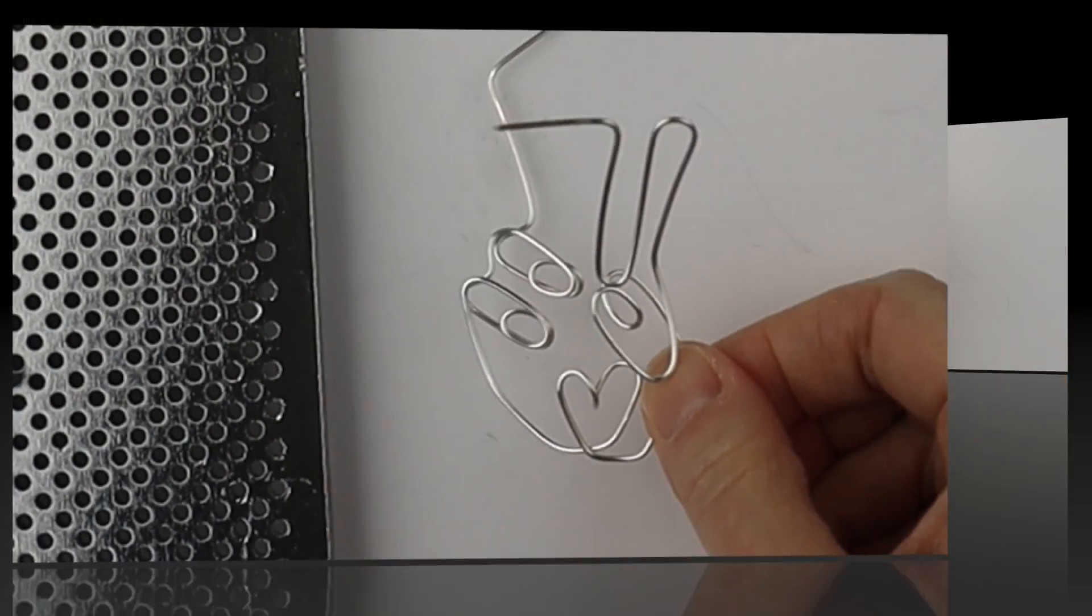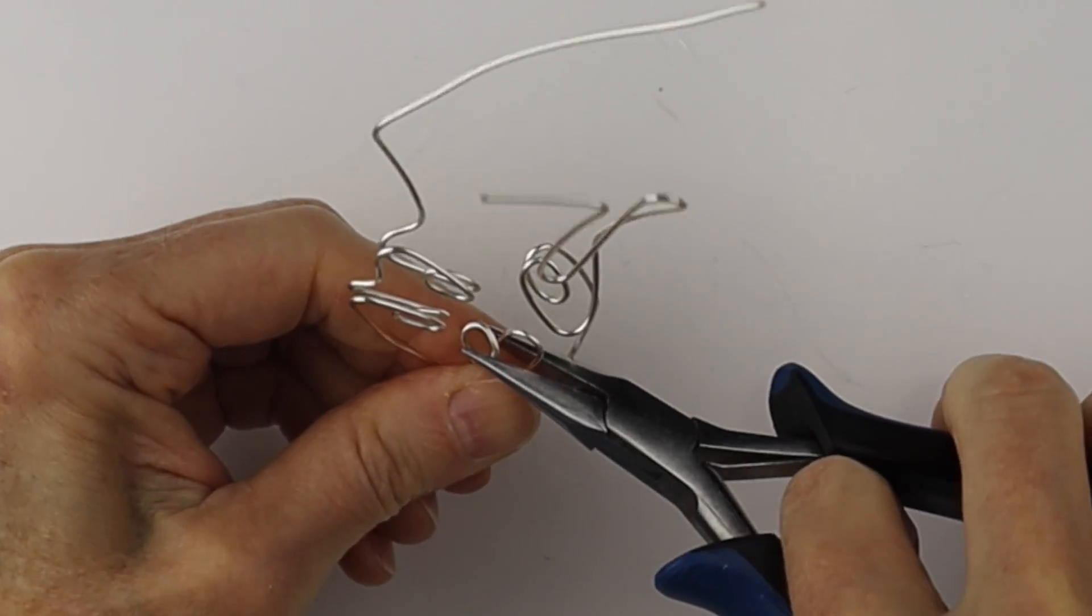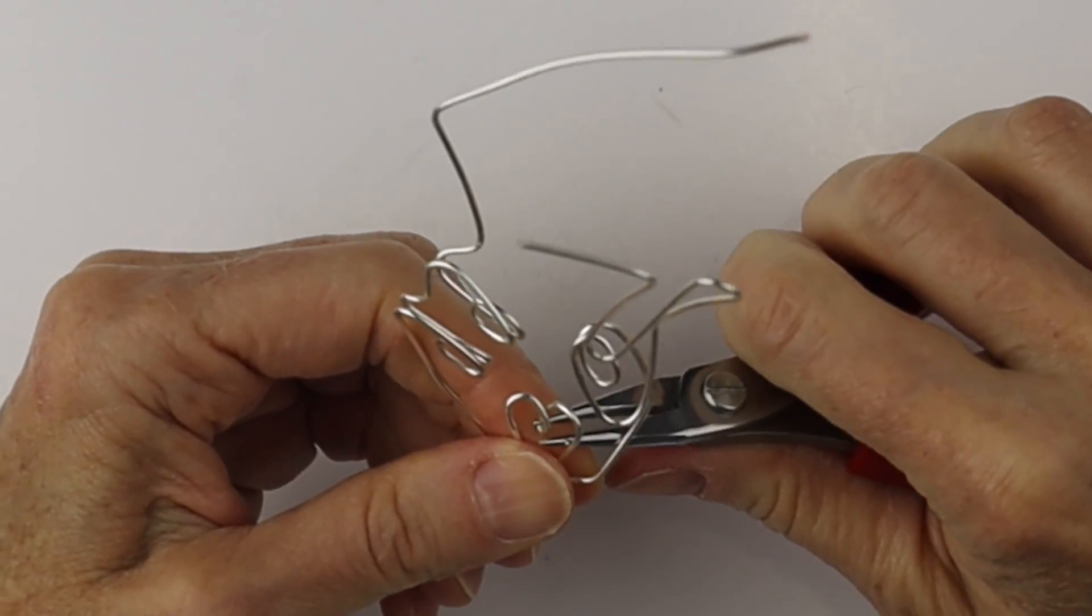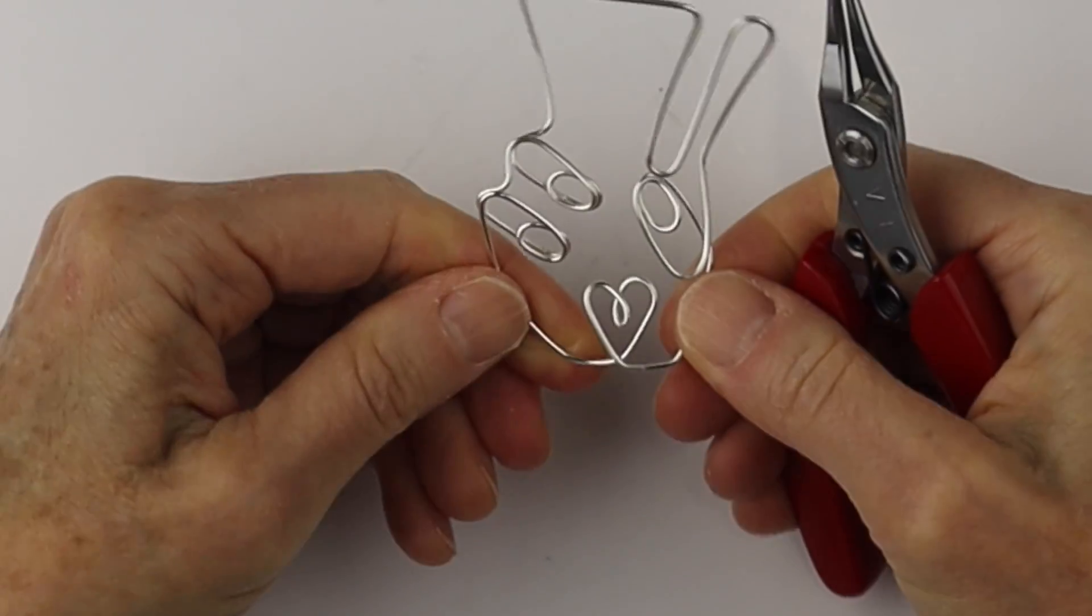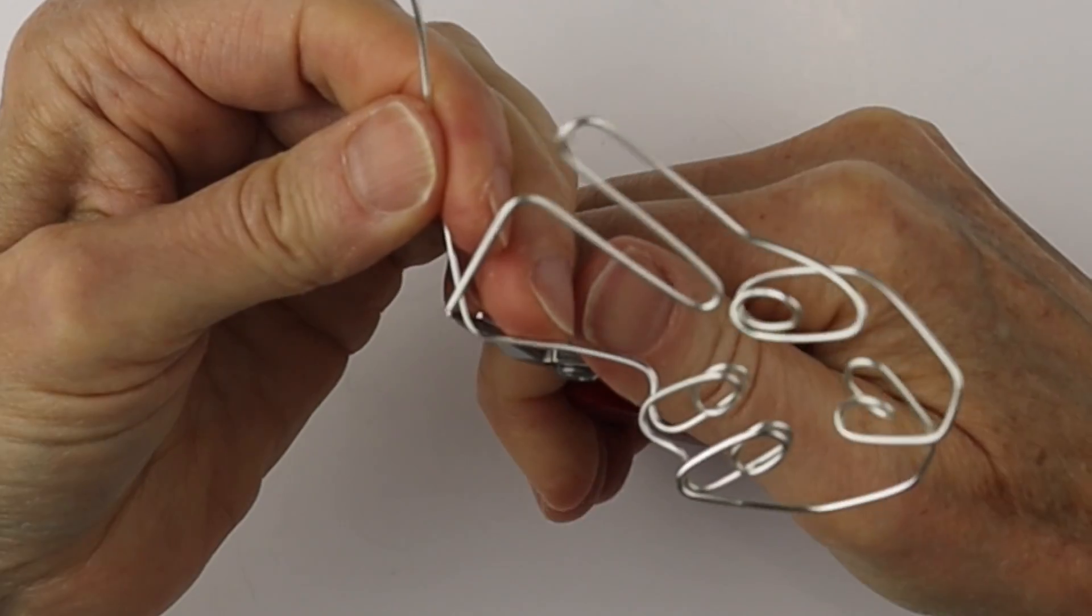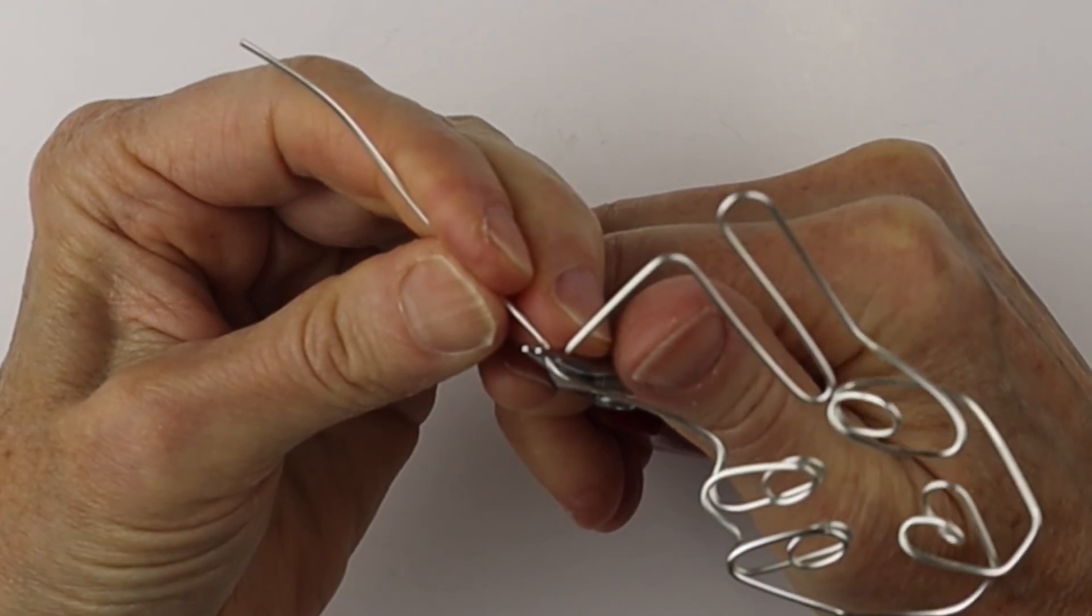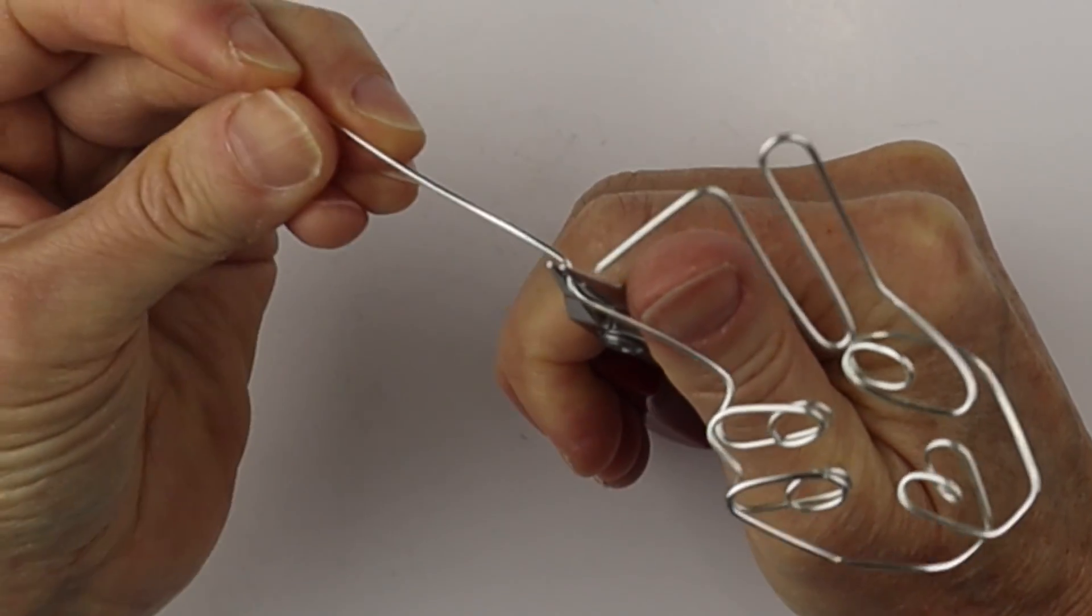And we are going to remove it from the jig. And I'm just going to press the heart down a little bit and adjust it so it's nice and symmetrical. Just pressing it down a bit and then we want to bend the wire up at the center of the finger.